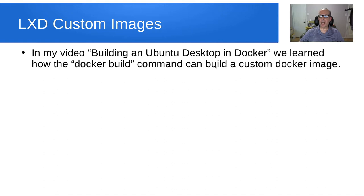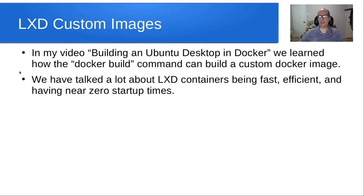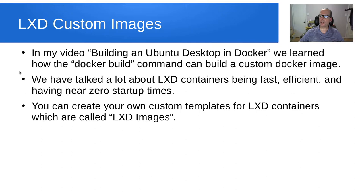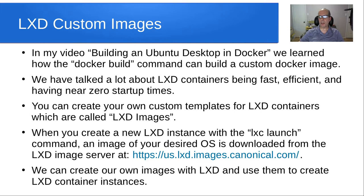In my video building an Ubuntu desktop in Docker, we learned how the Docker build command can build a custom Docker image. We have talked a lot about LXD containers being fast, efficient, and having near zero startup times. You can create your own custom templates for LXD containers, which are called LXD images. When you create a new LXD image with the lxc launch command, an image of your desired OS is downloaded from the LXD image server at the URL listed. We can create our own images with LXD and use them to create LXD container instances.